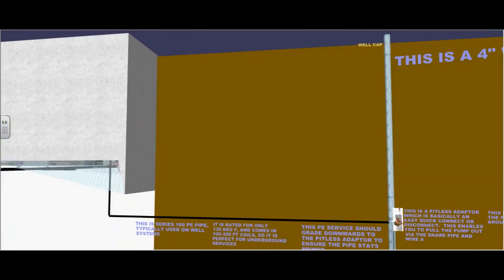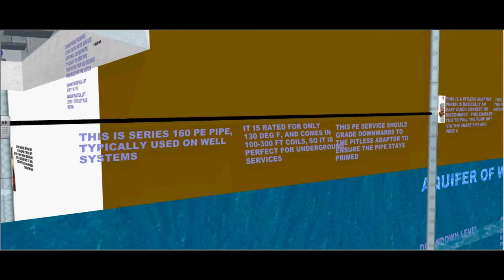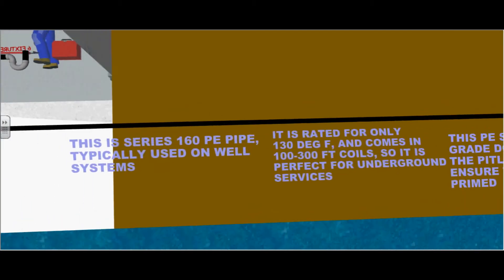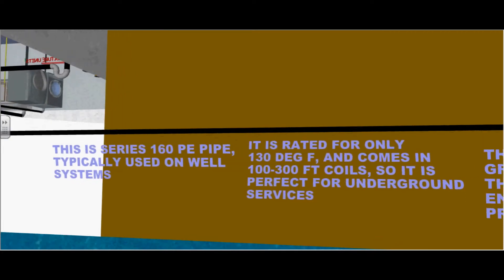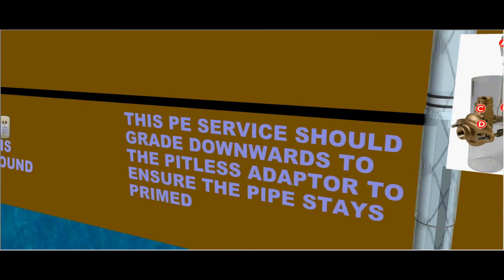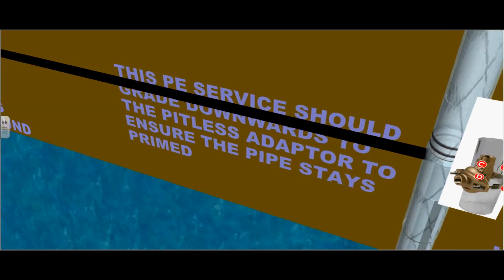This is a series 160 polyethylene pipe typically used on well systems. It is rated for only 130 degrees Fahrenheit and comes in 1 to 300 foot coils so it is perfect for underground services. This polyethylene service should grade downwards towards the pitless adapter to ensure that the pipe stays primed.